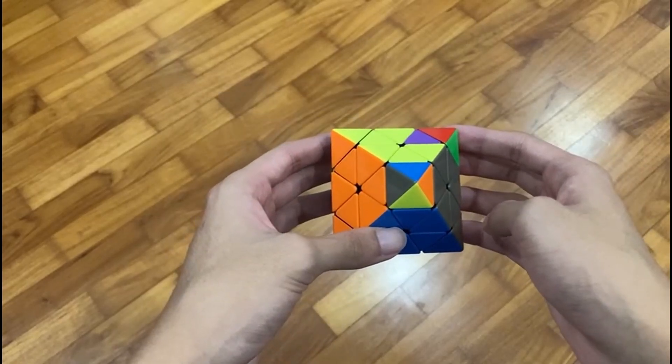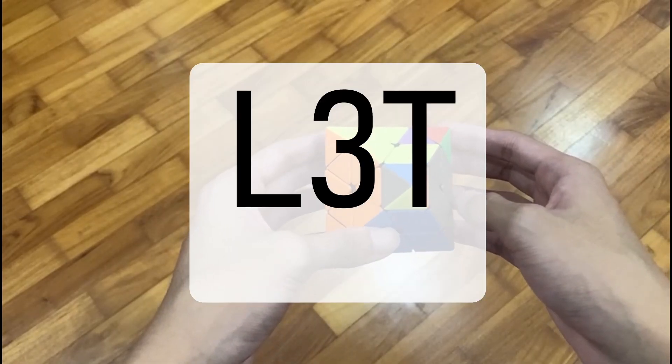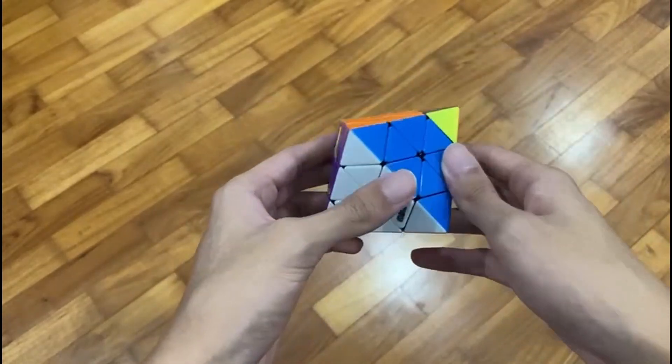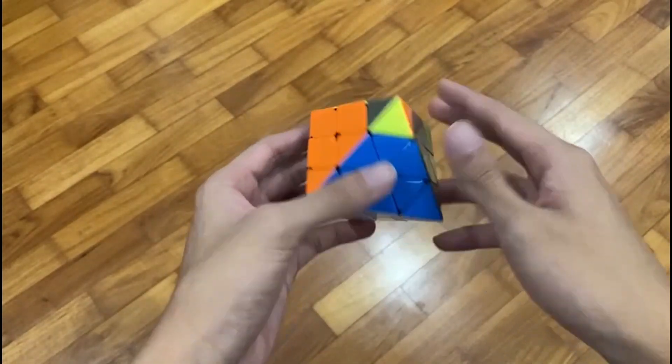Oh wait, this step. It's called L3C and I absolutely hate it because it stands for last three triplets, which involves having to pair this, this, this, all at one time. Man, I can never understand how to do this.